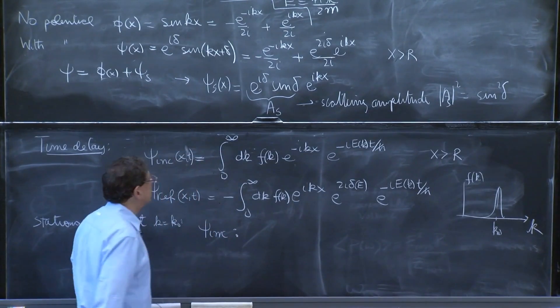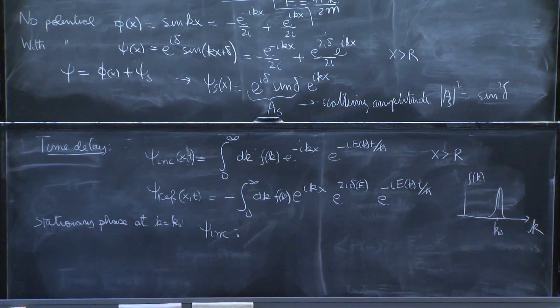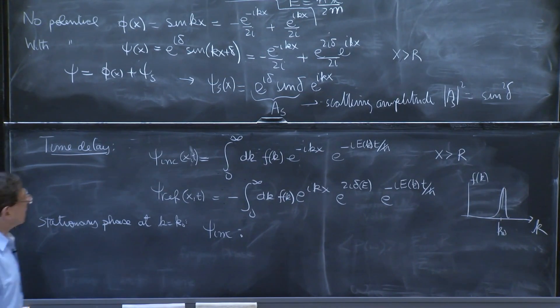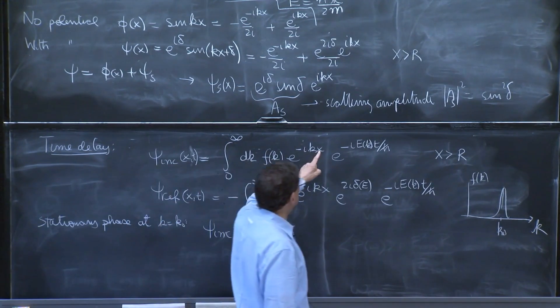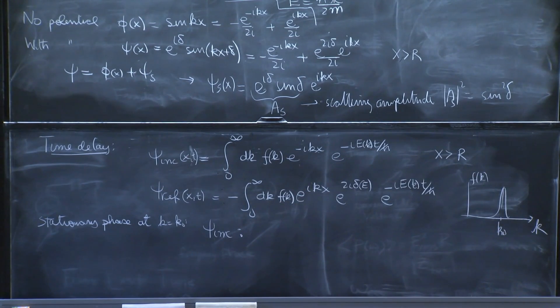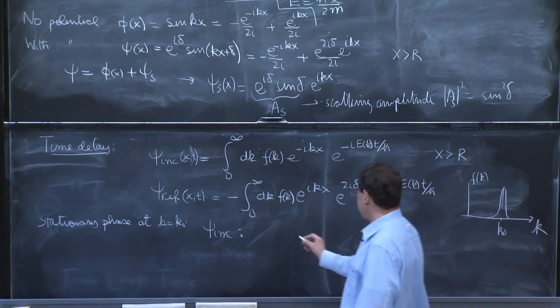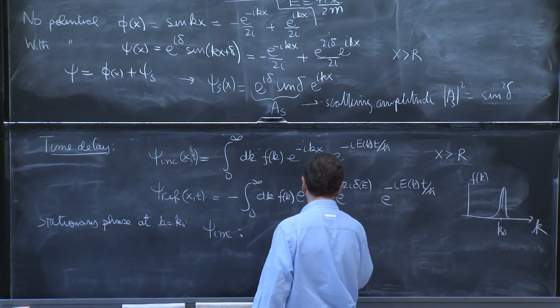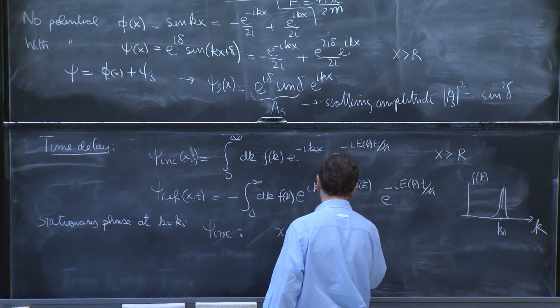For psi incident, you've done this computation a few times already. For psi incident, you find the relation between x and t. And I will just write it. It's simple. You find that x is equal to minus h bar k0 over m t.